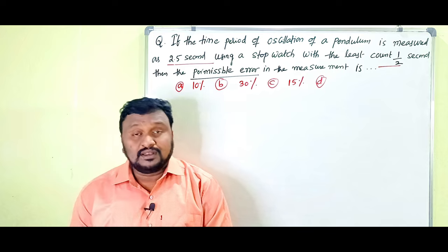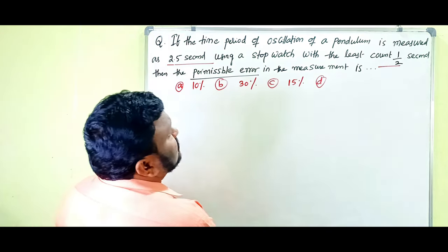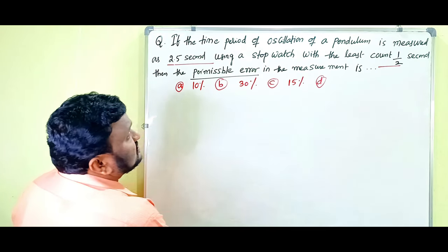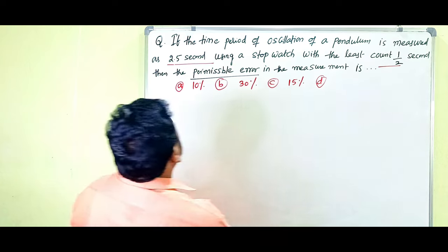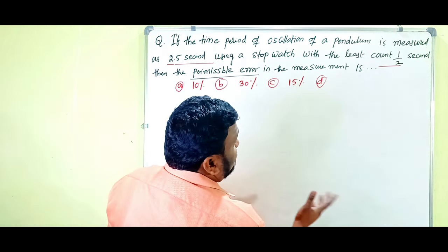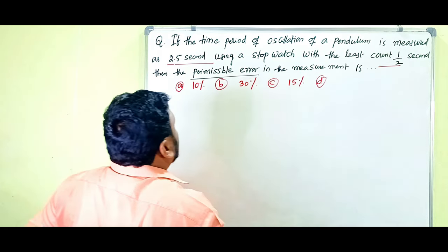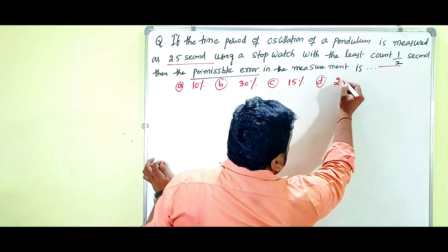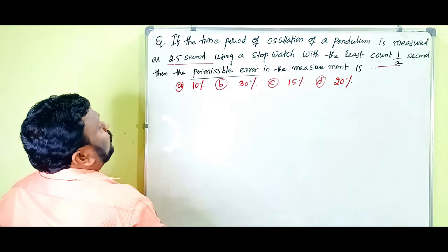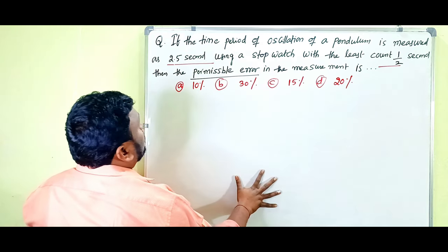Let's go for the topic. If the time period of oscillation of a pendulum is measured as 2.5 seconds using a stopwatch with the least count of 1/2 second, then the permissible error in the measurement is — options are 10%, 30%, 15%, and 20%.